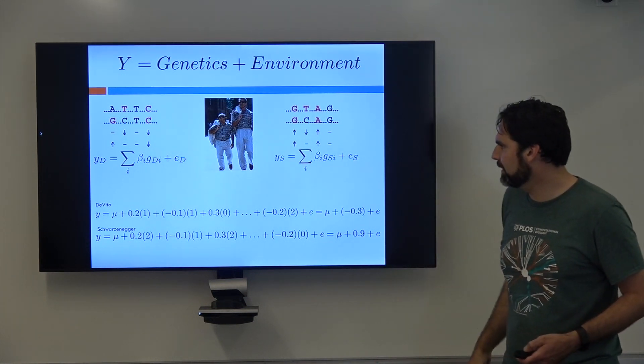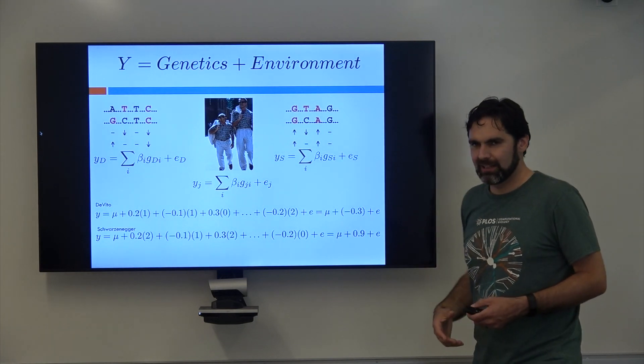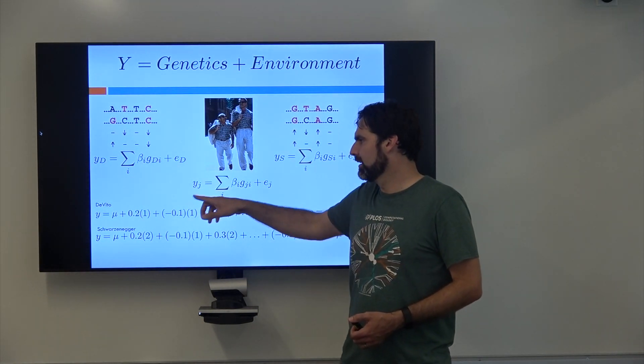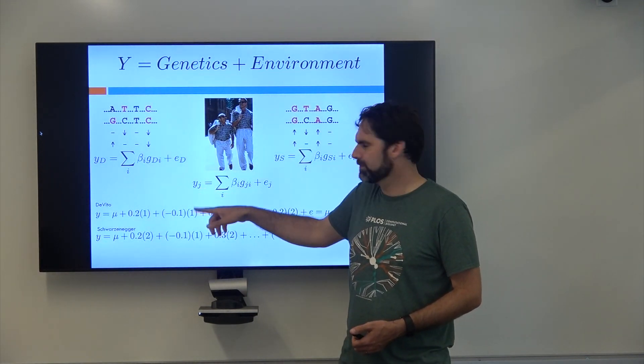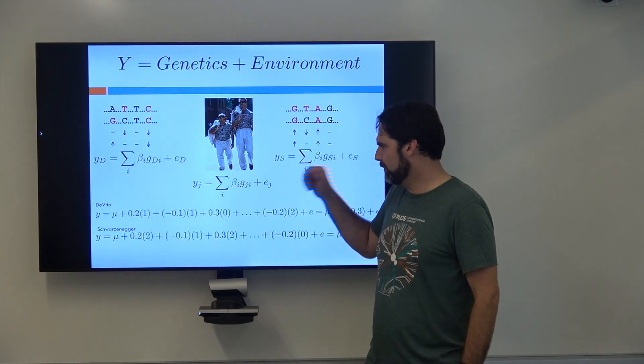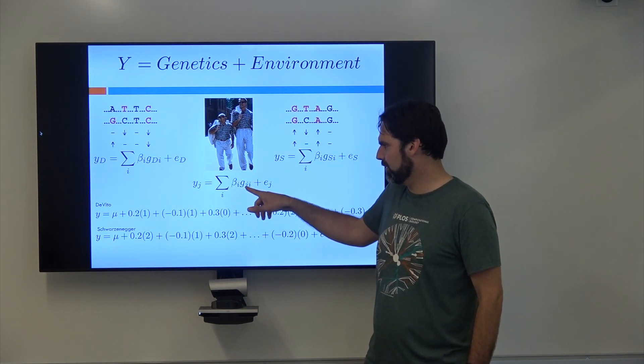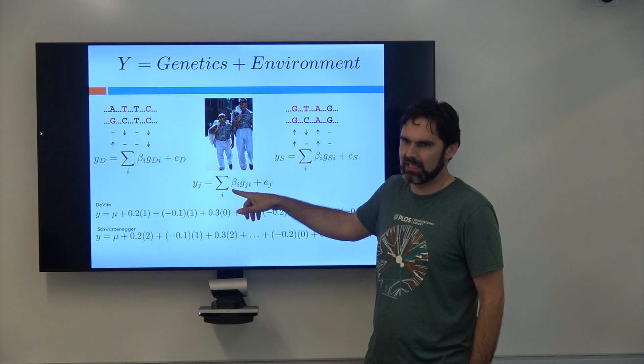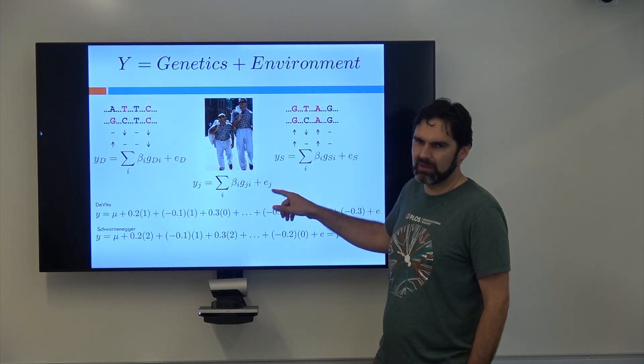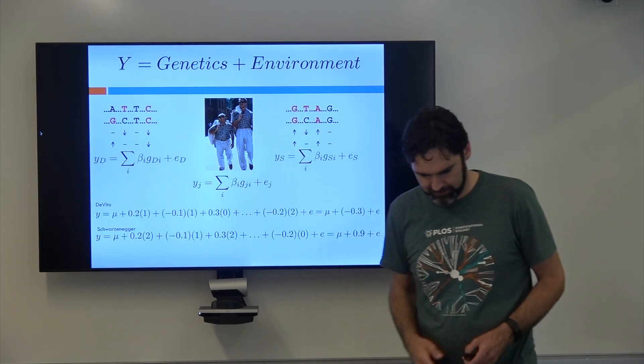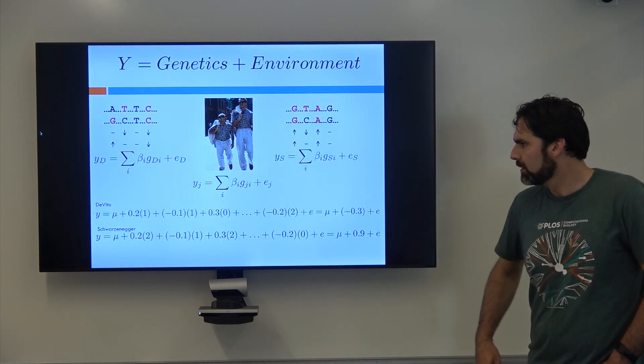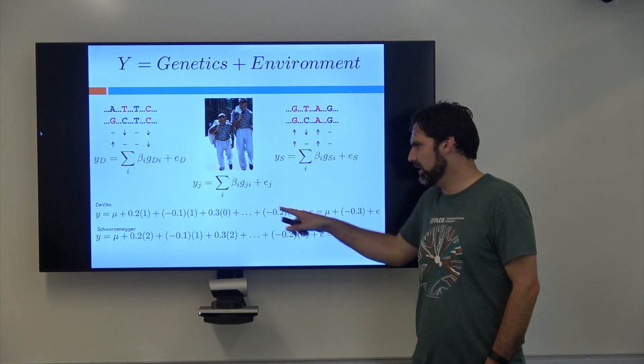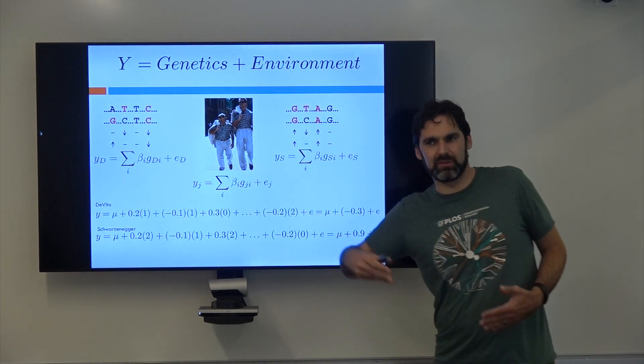Of course not everyone is named Danny DeVito and Arnold Schwarzenegger, so a lot of times we'll index with a J. So what we're saying here is that the phenotype of the Jth individual is going to be this summation over all the genetics of the Jth individual with the effect of those genetics and then whatever the environment of that individual is. So i represents the different SNPs or variants there? Exactly, yeah, so i is summing over the SNPs and J is just which individual we're looking at.